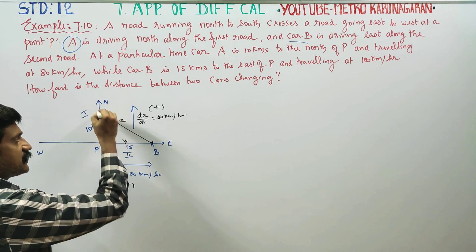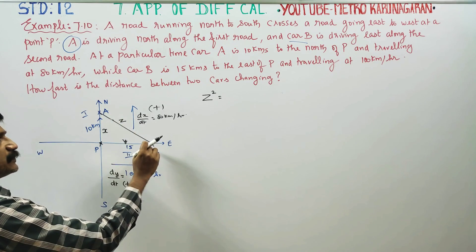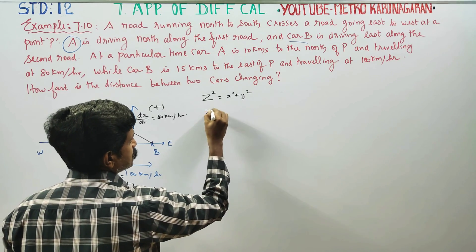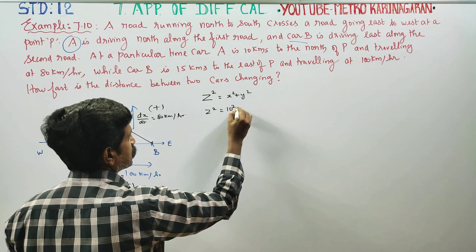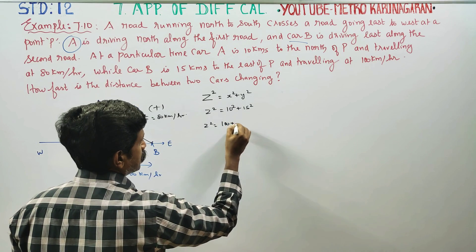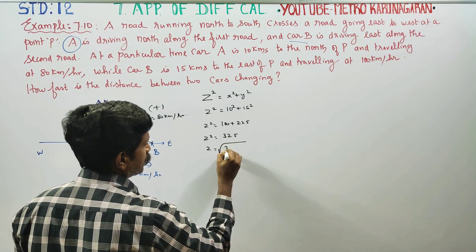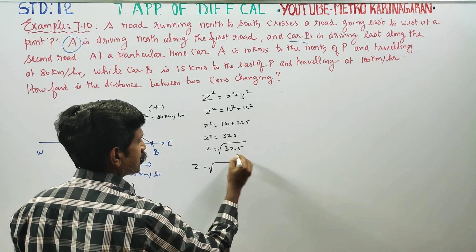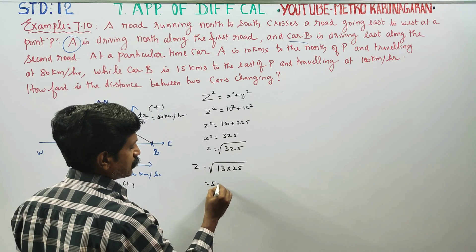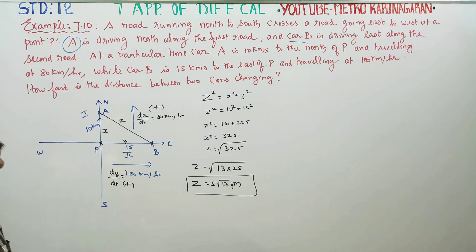The distance between A and B is Z. First, I am going to find the Z value using the Pythagorean theorem. Z² = x² + y². Z² = 10² + 15² = 100 + 225 = 325. Z = √325 = √(13 × 25) = 5√13 kilometers.